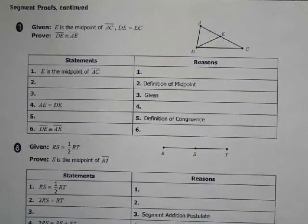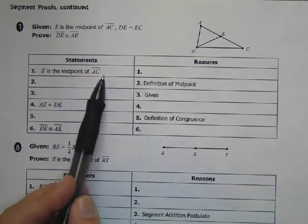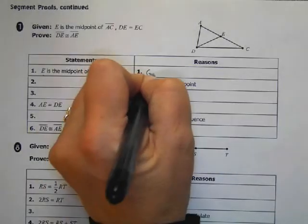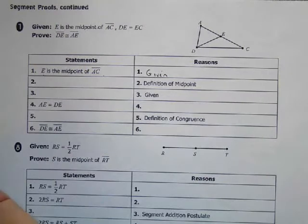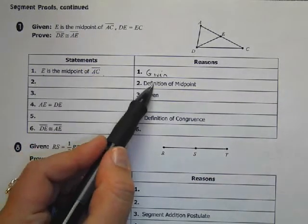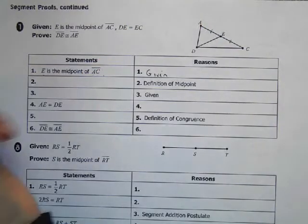So our first proof, this time you have to fill in some statements and reasons. We always know that the first statement always comes from the given. So if E is the midpoint of AC, then by definition of midpoint, I know that segment AE is equal to segment EC.